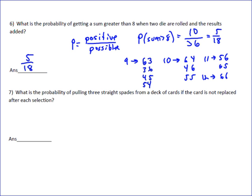The next one is, what's the probability of pulling three straight spades from a deck of cards if the card is not replaced after each selection? This is three separate events also, but we can multiply these together. Usually on the die we can't, usually on the cards we can.